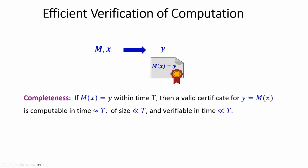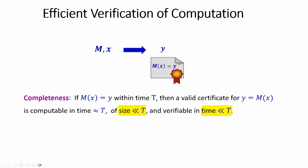The guarantees I want from this certificate: first, completeness — one can generate such a certificate. If this computation takes time T, we want to ensure one can generate a valid certificate in time not much more than T, so in the real world these certificates can actually be computed. And importantly, the size of the certificate and the time to verify it should be much, much smaller than T. The size and time to verify should be very, very small — otherwise I'll just do everything on my own device. These certificates should be succinct and efficiently verifiable.